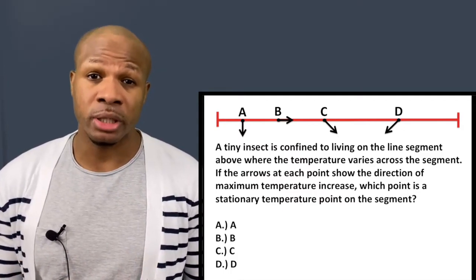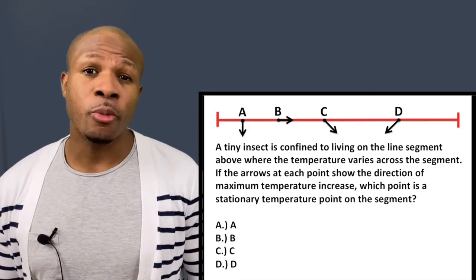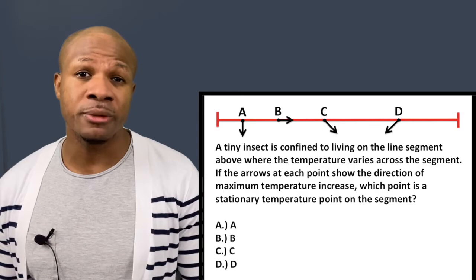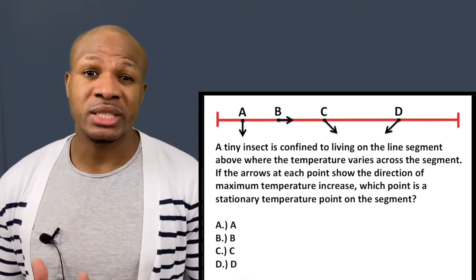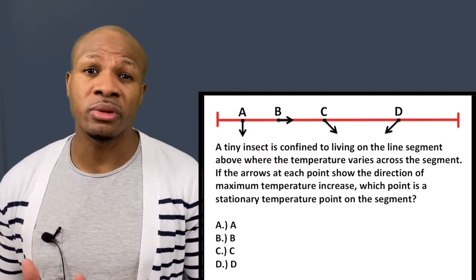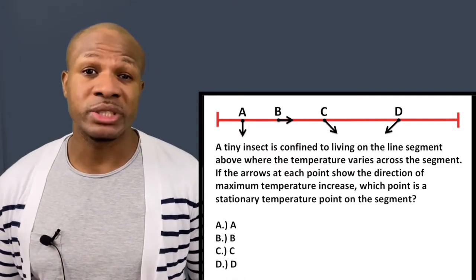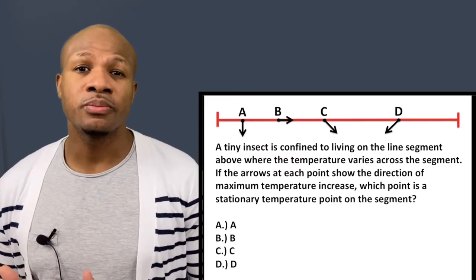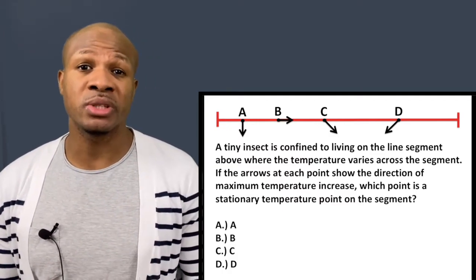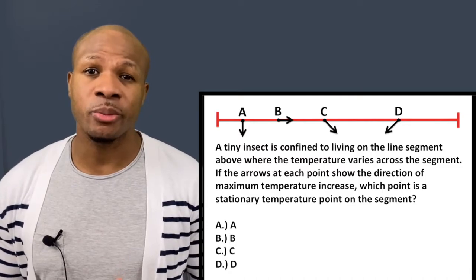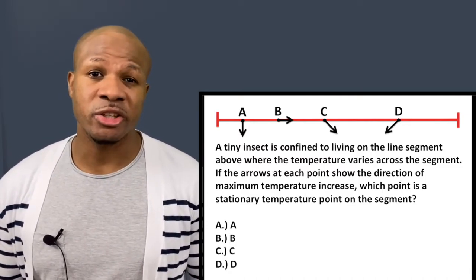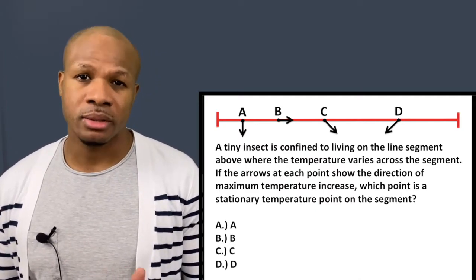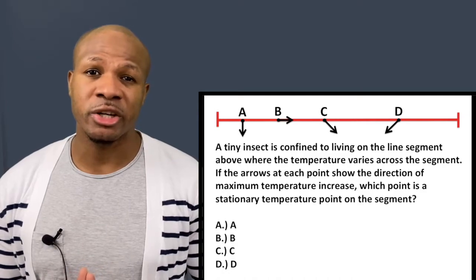Looking at point D, the arrow points down and to the left, meaning if the ant moves left from D there's an increase in temperature — so D is not a stationary point. At point C, the arrow points down and to the right, so moving right raises temperature and moving left lowers it — also not stationary. Point B clearly shows an increase in temperature moving right and a decrease moving left, so B is not stationary either.